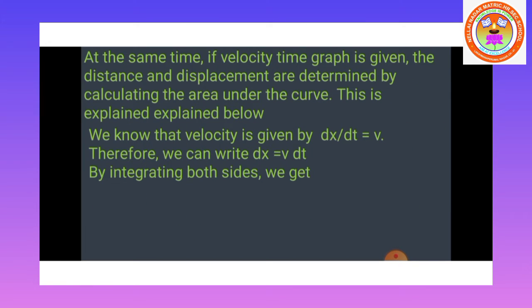At the same time, if the velocity-time graph is given, the distance and displacement are determined by calculating the area under the curve. From the graph between velocity and time, we can calculate the area under the curve, which gives the value of the displacement. We know that velocity is given by dx/dt = v, therefore dx = v·dt.